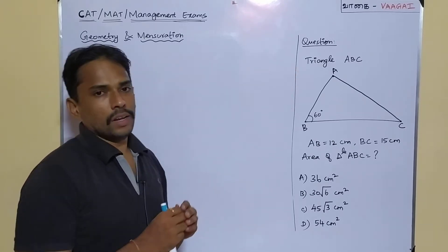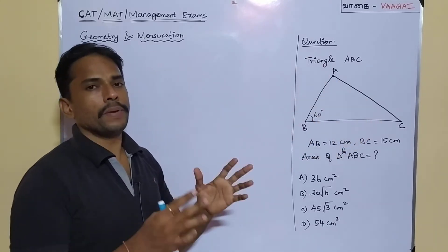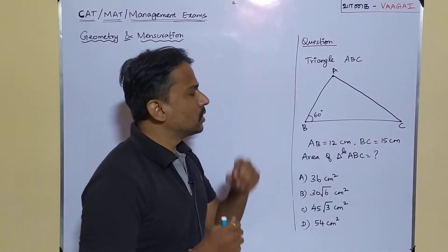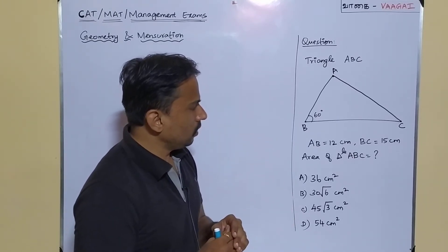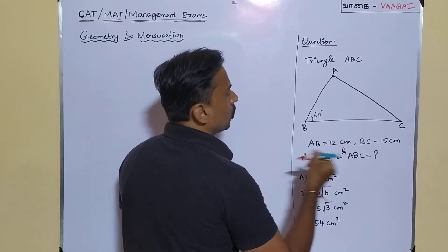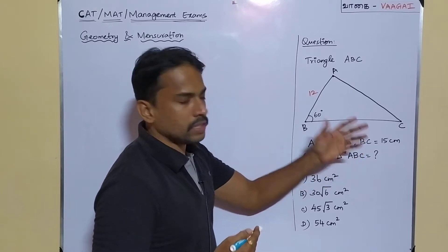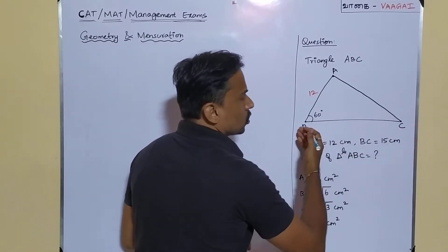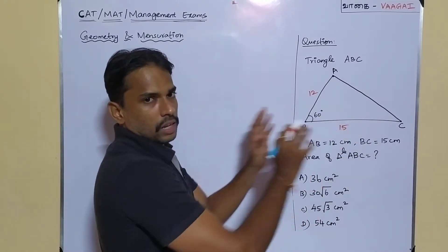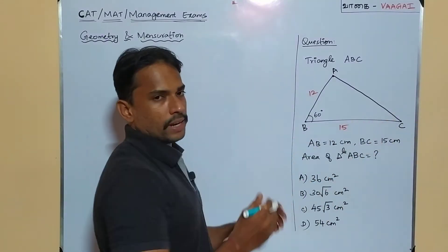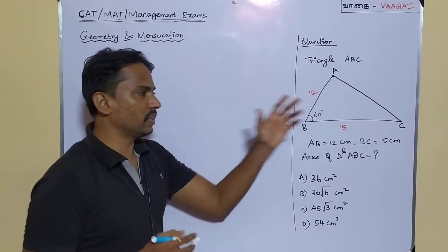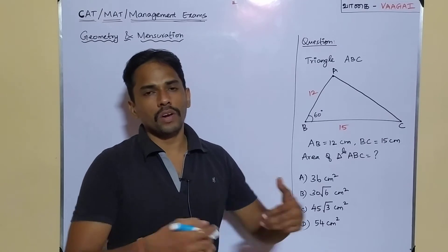Our question is: there is a triangle ABC. In this triangle, angle B is given to be 60 degrees. Side AB is equal to 12 centimeters, and side BC is equal to 15 centimeters. We can take BC to be the base of the triangle, so the base is 15 centimeters. We are asked to find the area of triangle ABC.